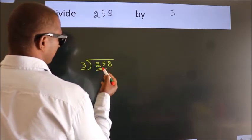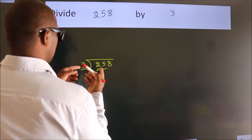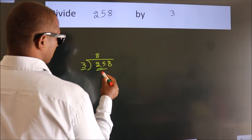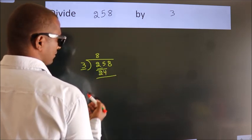should take two numbers: 25. A number close to 25 in the 3 table is 3×8=24. Now we should